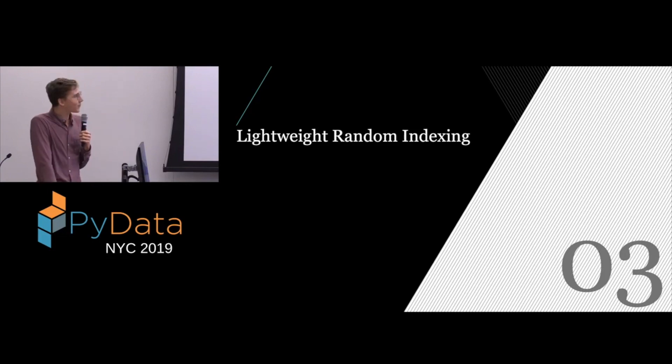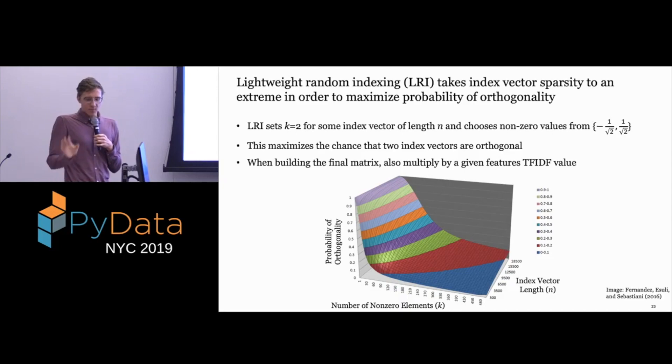Okay, there's a lot going on in this slide. The basic idea is that lightweight random indexing takes the sparsity in your index vectors to be the most extreme possible, which it sets only two values in the whole index vector to be non-zero. And they're chosen from the set one over the square root of negative, or one over the square root of two. That's so that every vector has length one, which the authors don't really talk about why is important, but they do talk about why you only choose two values to be non-zero. And this is basically maximizing the chance that any two index vectors will be orthogonal. And out of that result, you kind of get an approximation of the Hecht-Nielsen result, which will cause our resulting matrix to have nearly orthogonal vectors as the result. So things that looked different in the original space will still look different once we apply random indexing.